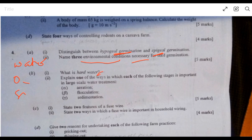What is hard water? Hard water is a type of water that does not lather easily with soap. It's a result of certain ions like calcium ion and magnesium ion present in it. Explain one of the ways in which the following stages is important in large-scale water treatment. Aeration helps to drive away undesirable odor and taste. Flocculation helps to aggregate suspended particles. When they are brought together like that, they sink in the water. Sedimentation helps to make the water clear and helps the particles settle.